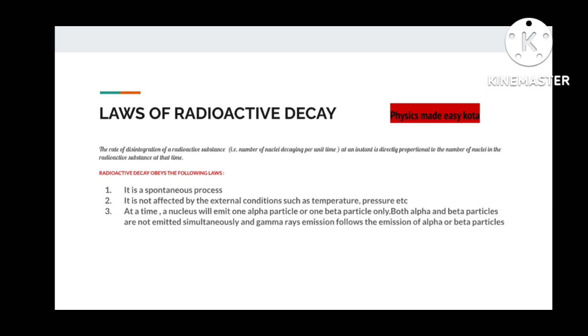Rule number one: radioactive decay is a spontaneous process. It means that it is not affected by whatever the external conditions may be. Whatever the temperature or pressure, it will not be affected. The next law states that at a time, a nucleus will emit one alpha particle or one beta particle only.